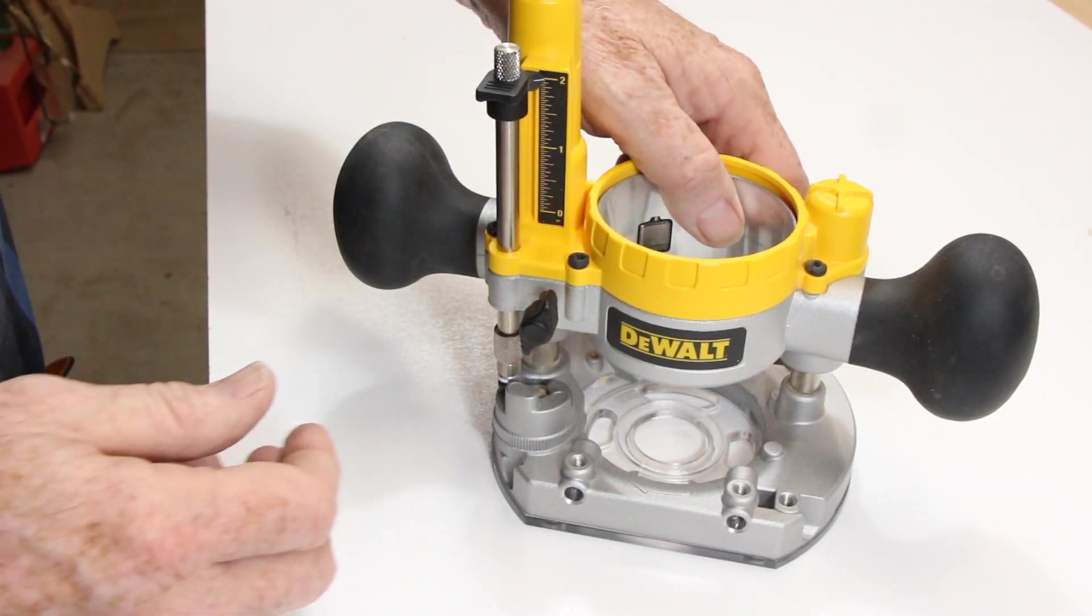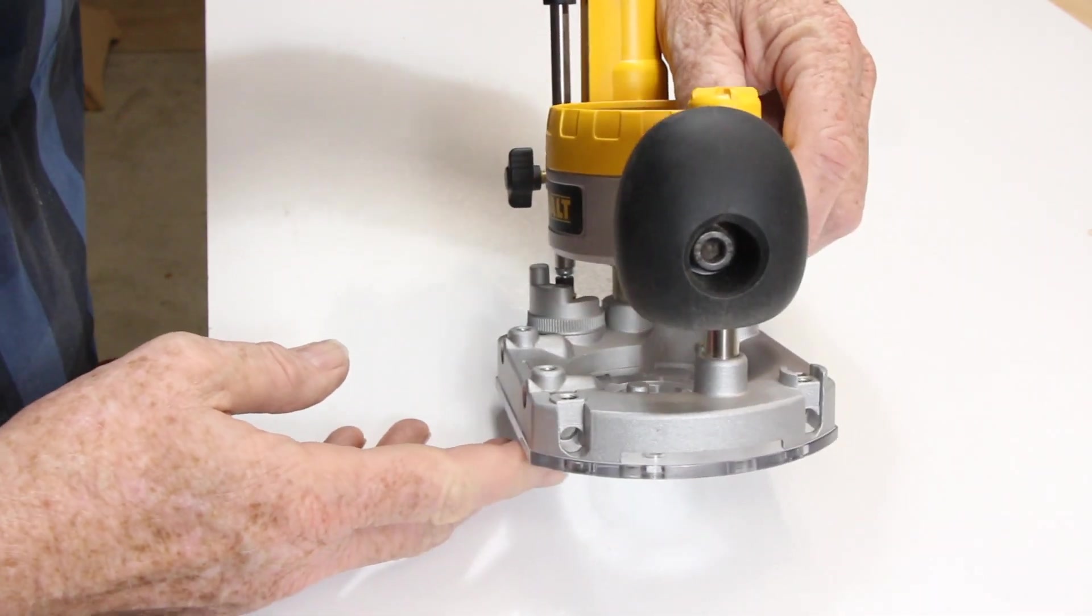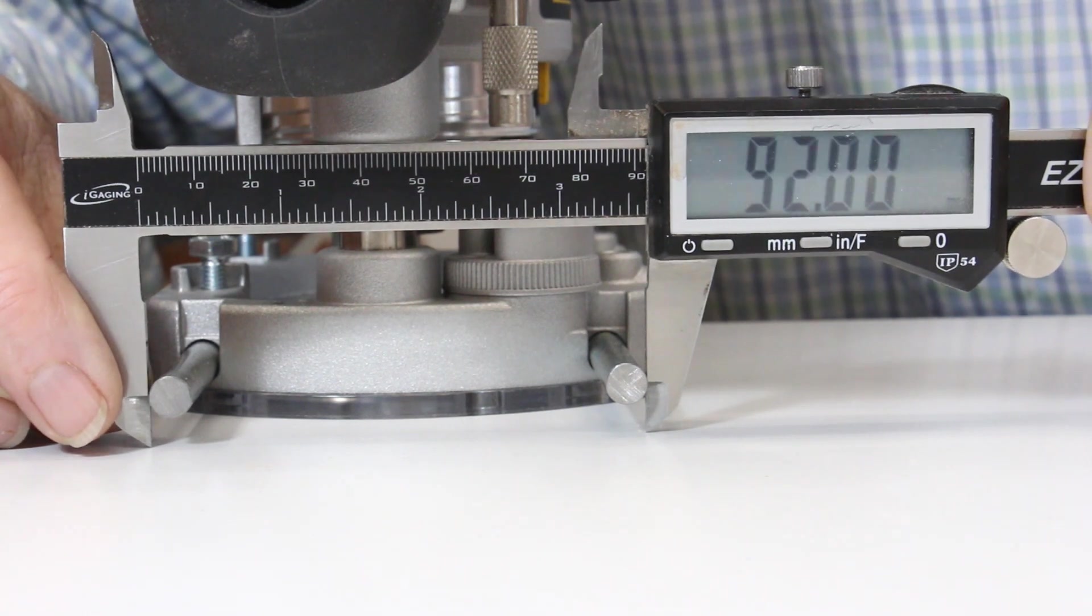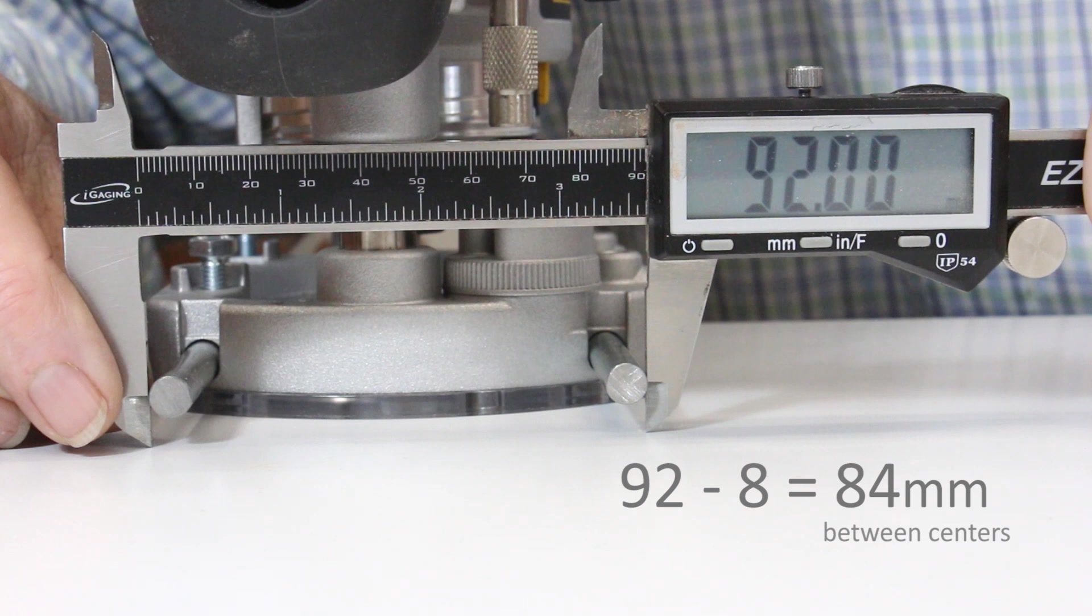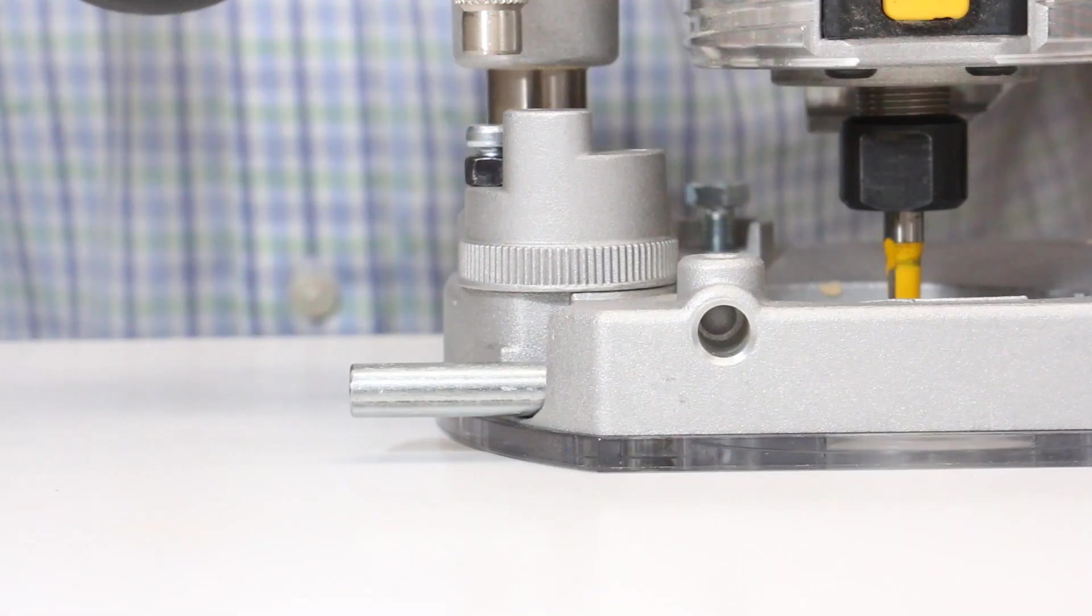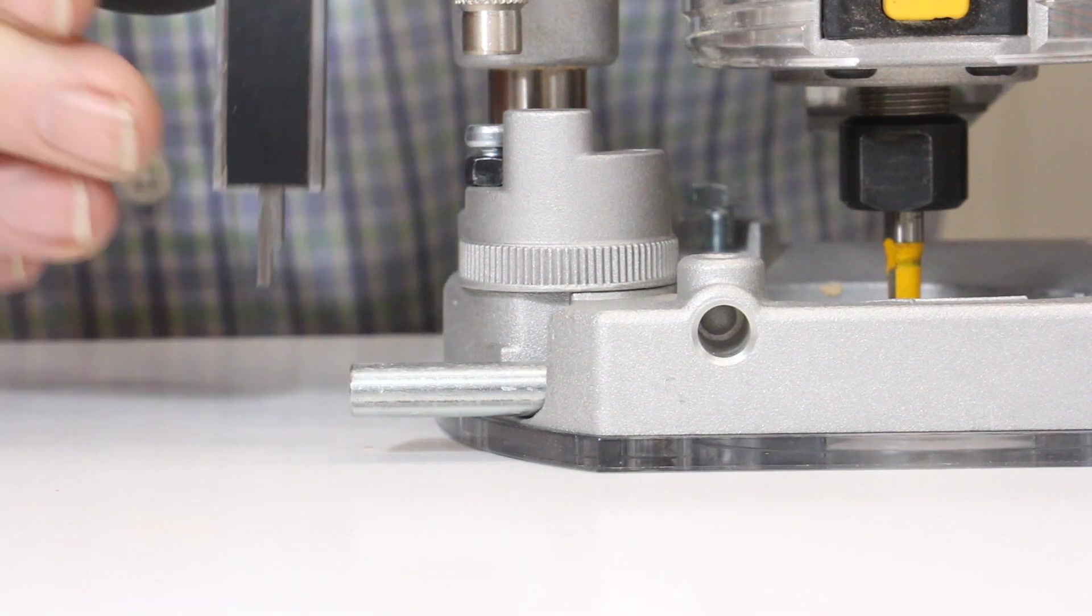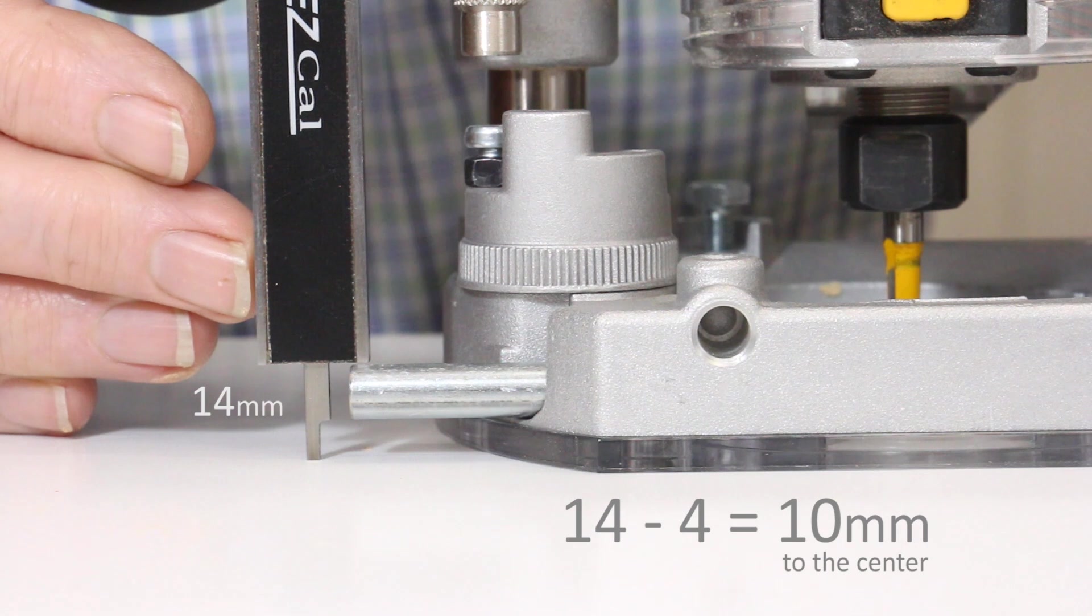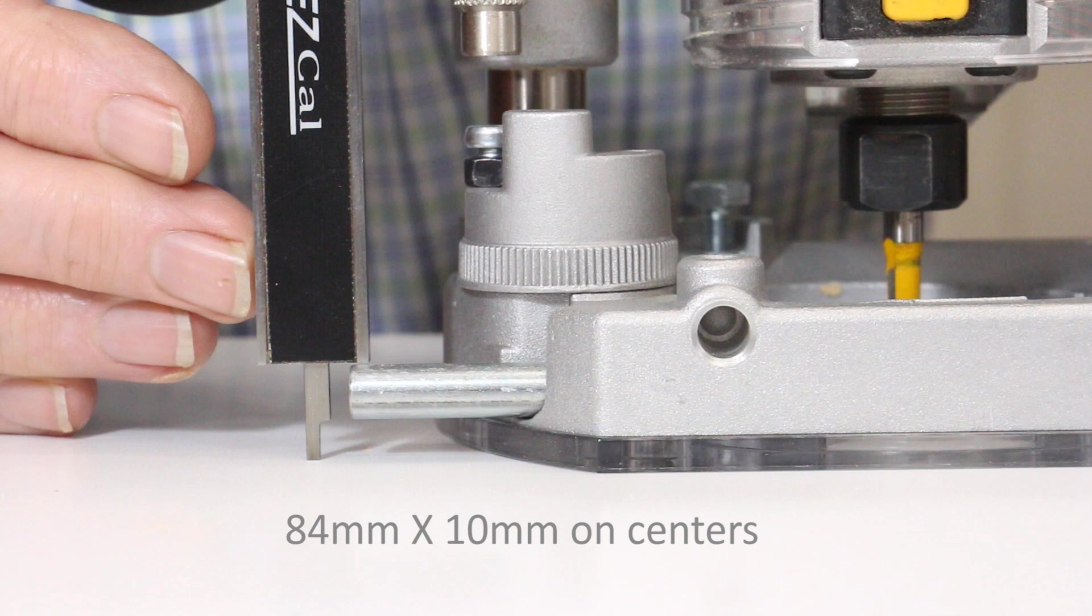First, I need to establish the exact spacing of the holes in my router base. Lock the rods in place and measure the outside span accurately. Then subtract the thickness of one rod, which is 8 millimeters, to find the distance between centers. For the height above the work surface, measure to the top of one rod and subtract half of the thickness of the rod. These center measurements turned out to be 84 millimeters wide and 10 millimeters high for this DeWalt 611.